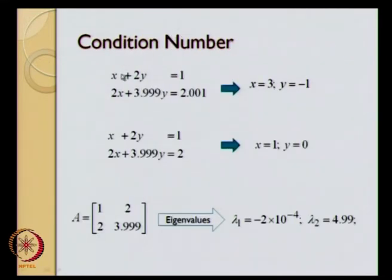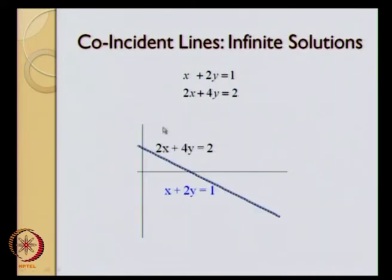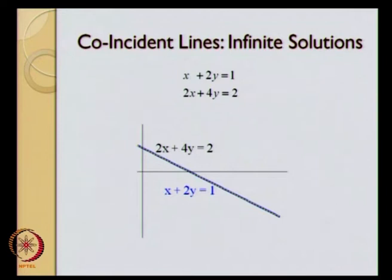In this particular example, we have x plus 2y equal to 1 as the first equation, and the second equation is 2x plus 3.999y equal to 2.001. What this means is that the second line is not exactly coincident with or exactly parallel to this line — it is sloped at a very small angle to this particular line. As a result, a small change in any of the numbers associated with matrix A or with vector B can result in a large change in the solution.